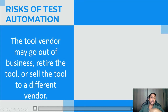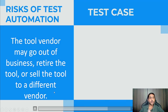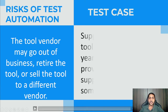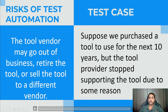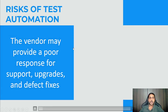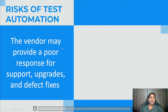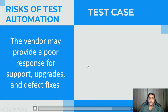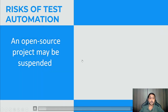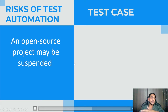The tool vendor may go out of business, retire the tool, or sell it to a different vendor. Suppose we purchase a tool to use for the next 10 years but the tool provider stops supporting it. When selecting a vendor, we should check their reputation. The vendor may also provide a poor response for support, upgrades, and defect fixes — if you have a problem with the tool and you are not getting a timely response, that is also a risk.